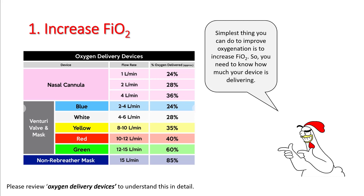First is increasing FiO2, and you have to know how much your patient is really receiving, so know this table very well. Using a nasal cannula, you can possibly reach up to a maximum of around 50 to 60% FiO2. You can use a Venturi mask which can give you more specific FiO2s. However, when your patient is hypoxemic, you want to give them 100% FiO2, and there are only two ways to achieve this: either a non-rebreather mask with a bag or a high flow cannula.